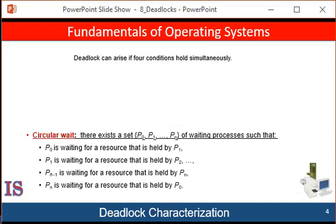And finally, circular wait. A set of waiting processes — say P0, P1 to Pn — must exist such that P0 is waiting for a resource held by P1, P1 is waiting for a resource held by P2, and so on, until finally Pn is waiting for a resource held by P0. All four conditions — mutual exclusion, hold and wait, no preemption, and circular wait — must all hold for a deadlock to occur. Note that circular wait implies hold and wait, so the four conditions are not completely independent.